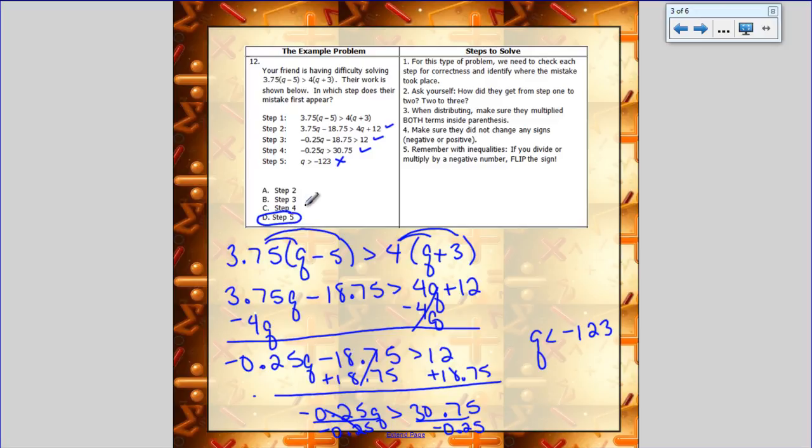That's where I can see that it happens. They might have made the mistake as they were doing step 4, but you didn't see it until step 5. So that's what you have to pick is step 5, because that's where you finally see the mistake—they forgot to flip the symbol.